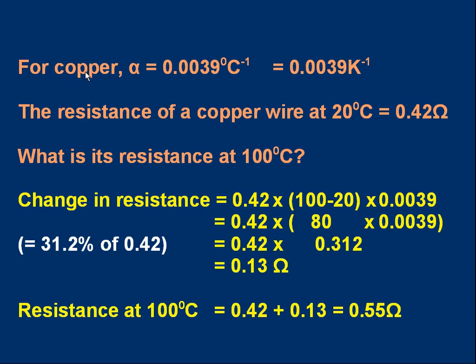Let's look at an example to see how we use these figures. For copper, the temperature coefficient of resistance, alpha, is 0.0039 Kelvin to the minus one. Let's suppose the resistance of a copper wire at 20 degrees C is 0.42 ohms. What we'd like to know is what is its resistance at 100 degrees C? We do this in two parts. We'll find the change of resistance going from 20 degrees to 100. And then once we know the change, we can add the change onto the original resistance, 0.42.